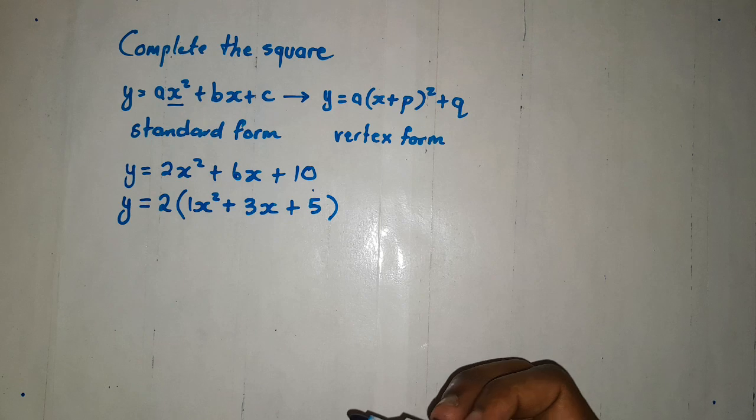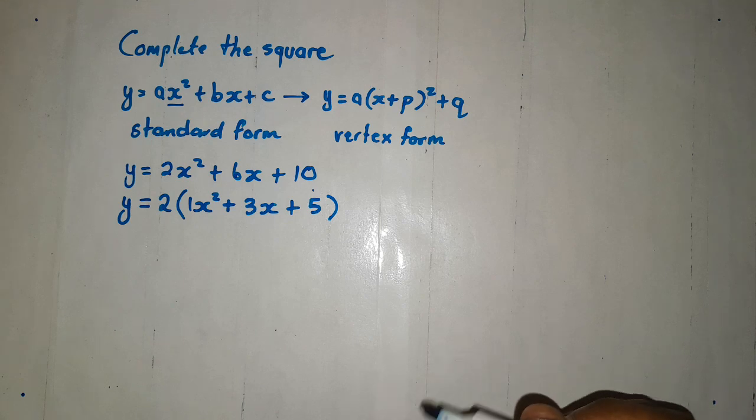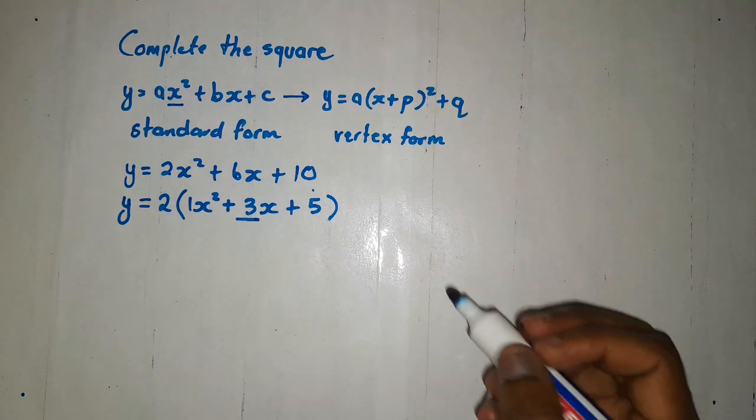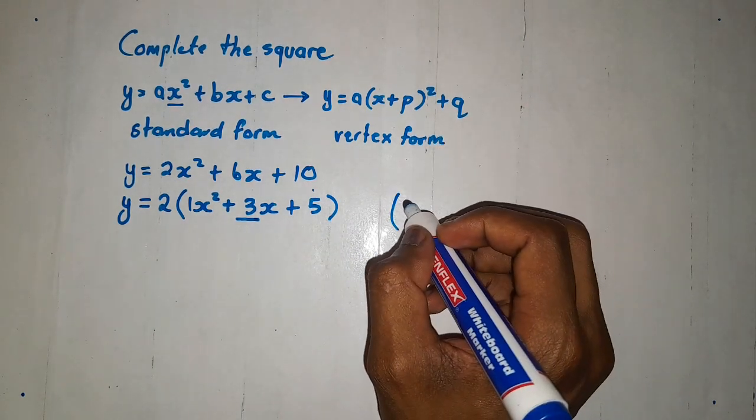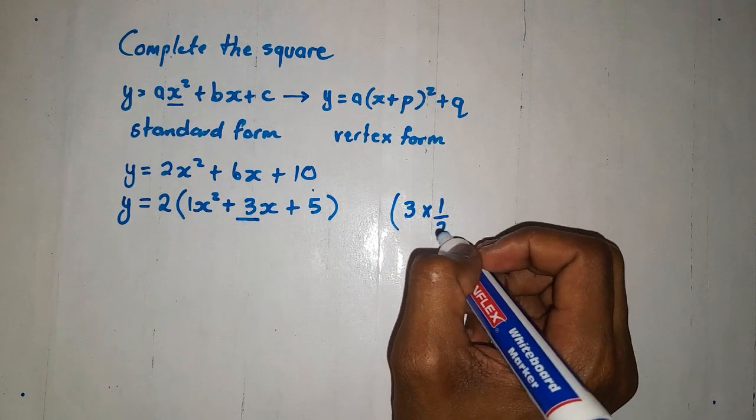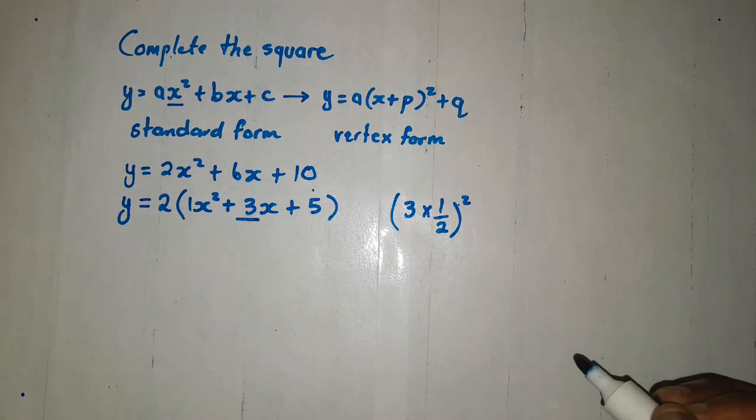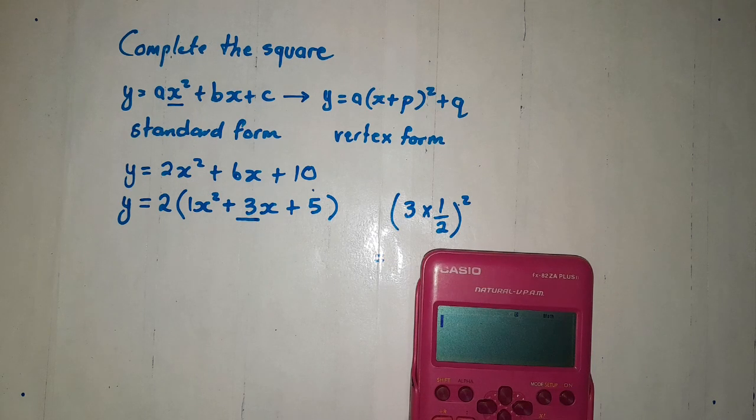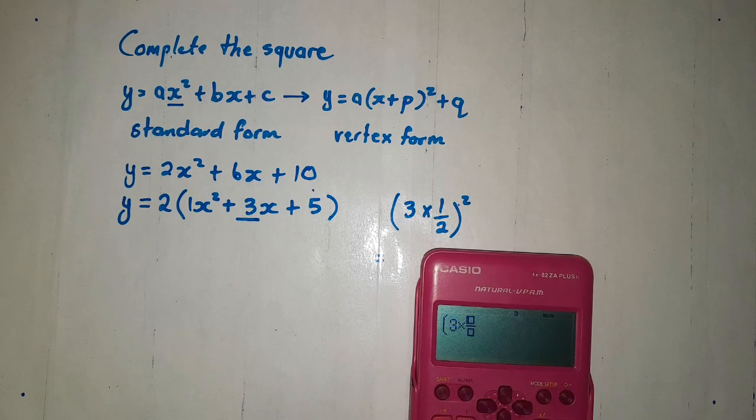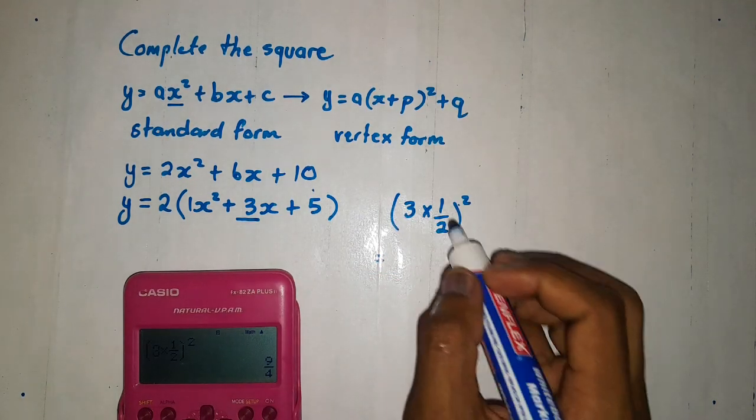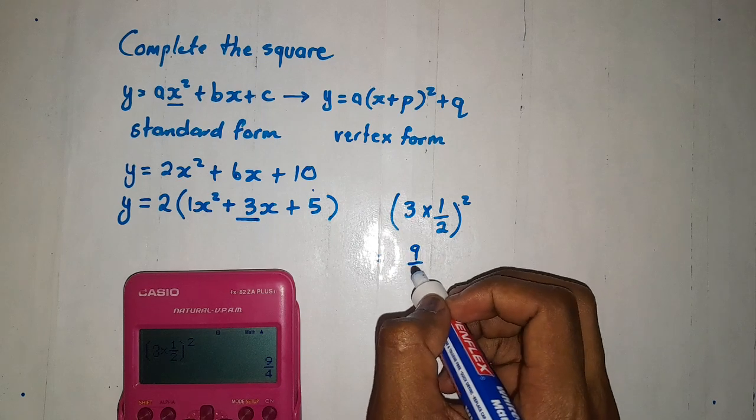Then now, immediately after doing this, we are going to take the middle term, which is 3. We are going to take plus 3 or positive 3, then multiply that middle term with 1 over 2, then we square. We take your calculator. We do like this: 1x squared plus 3, multiply by 1 over 2, then square. We get 9 over 4.